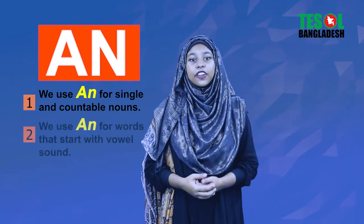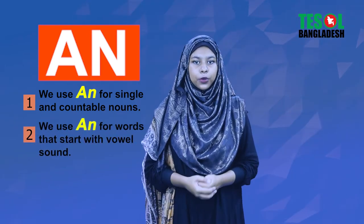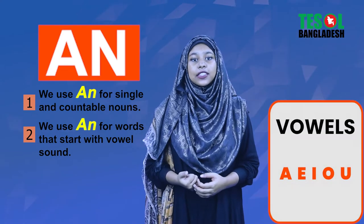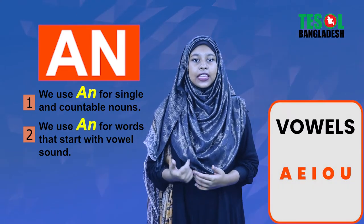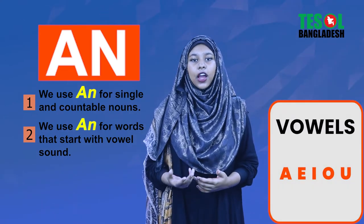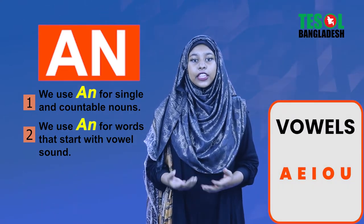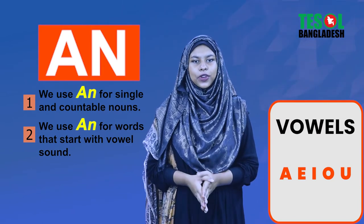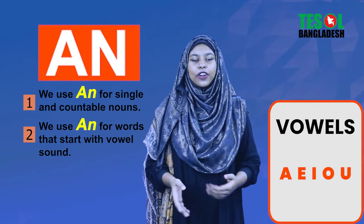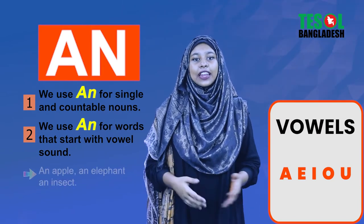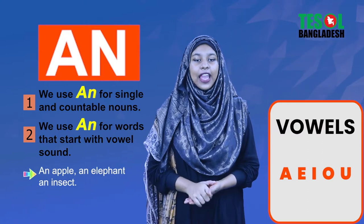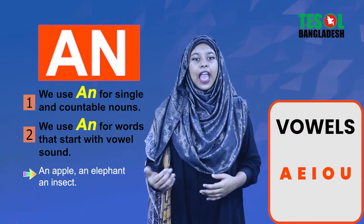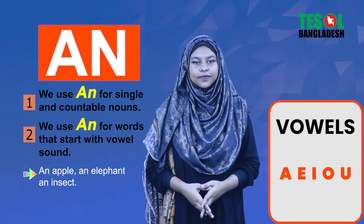We use an for vowel words — words that start with a, e, i, o and u are our an words. For example, an apple, an elephant, an insect.